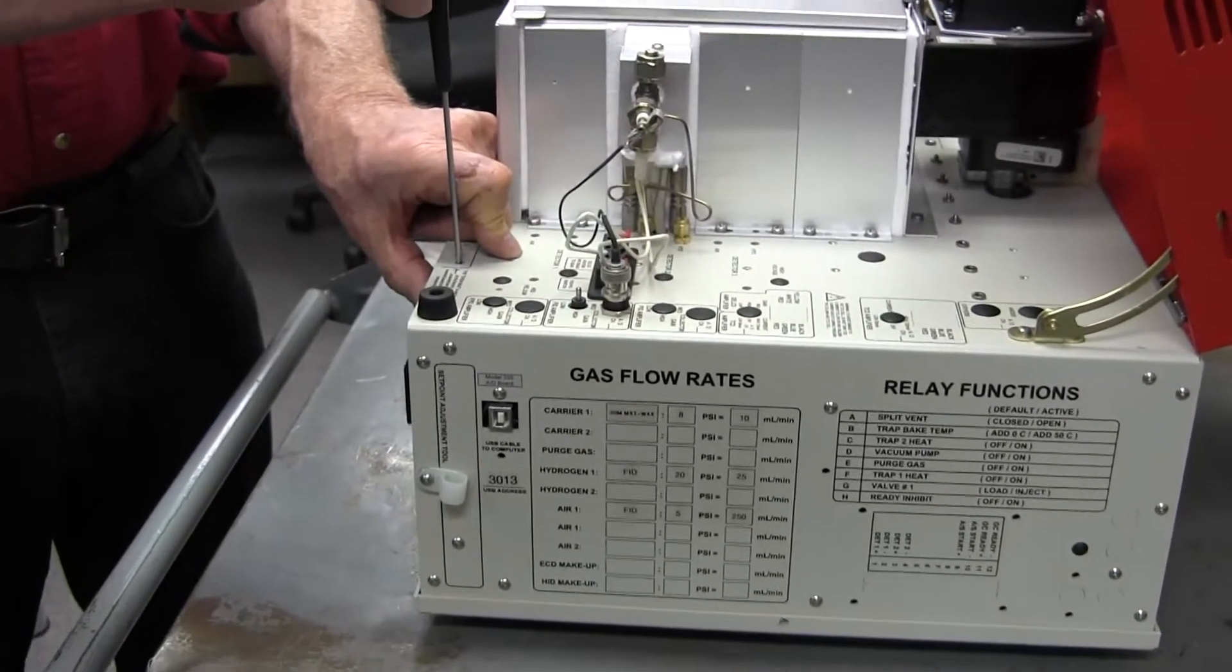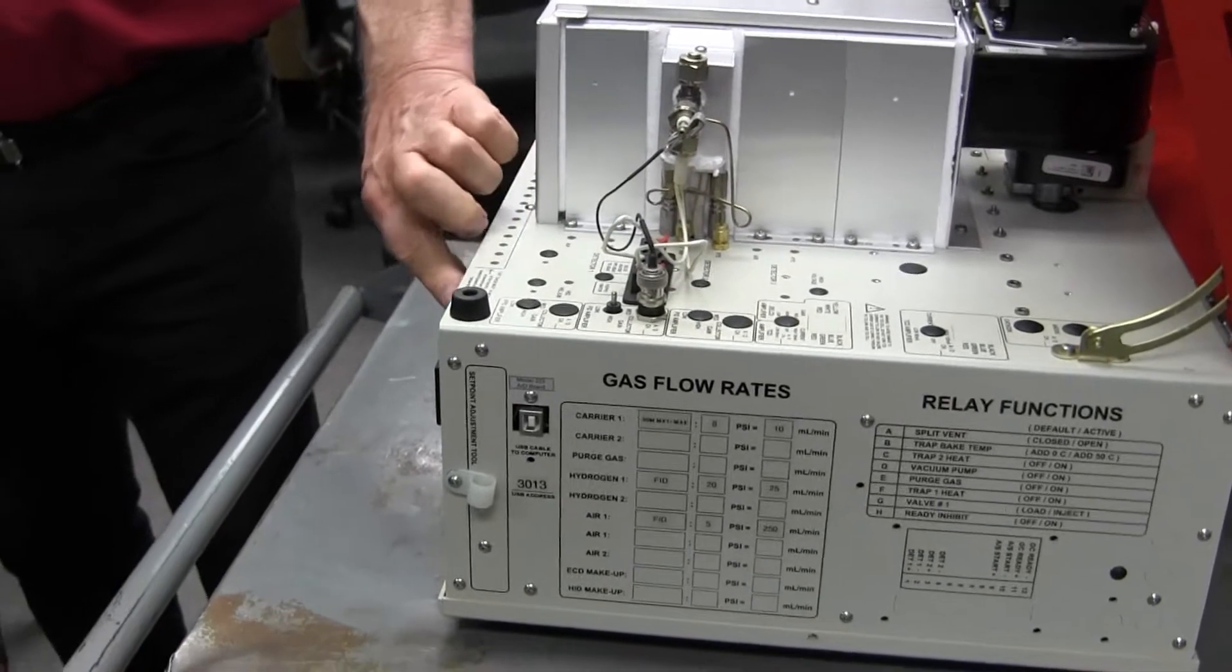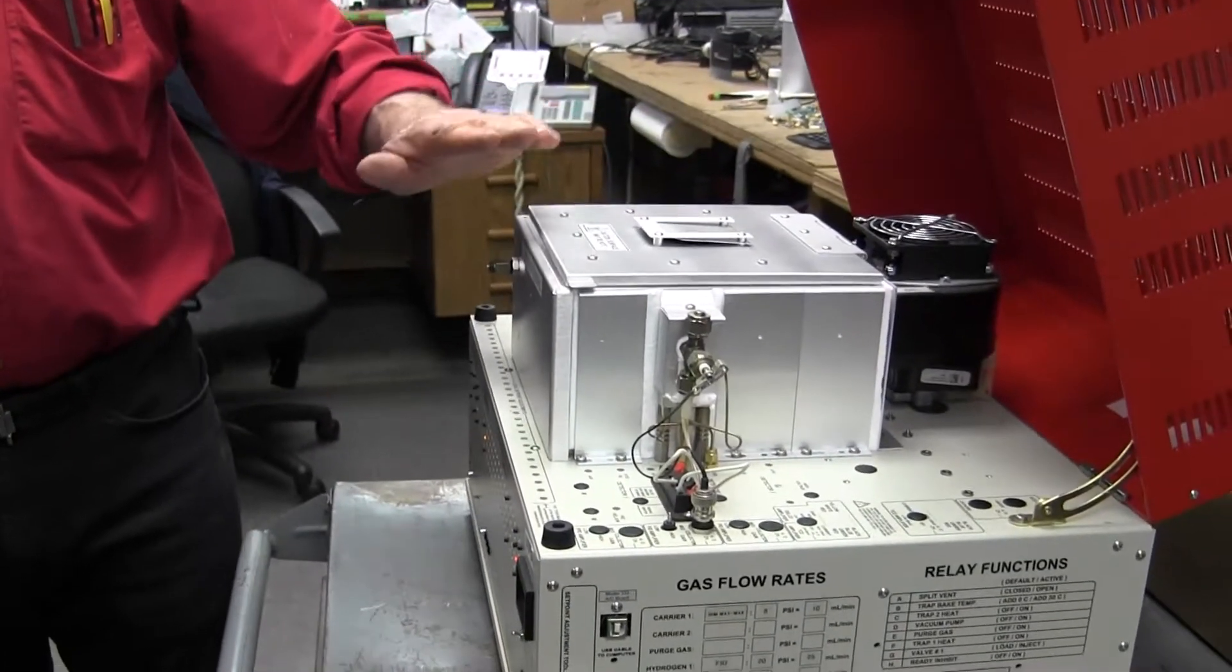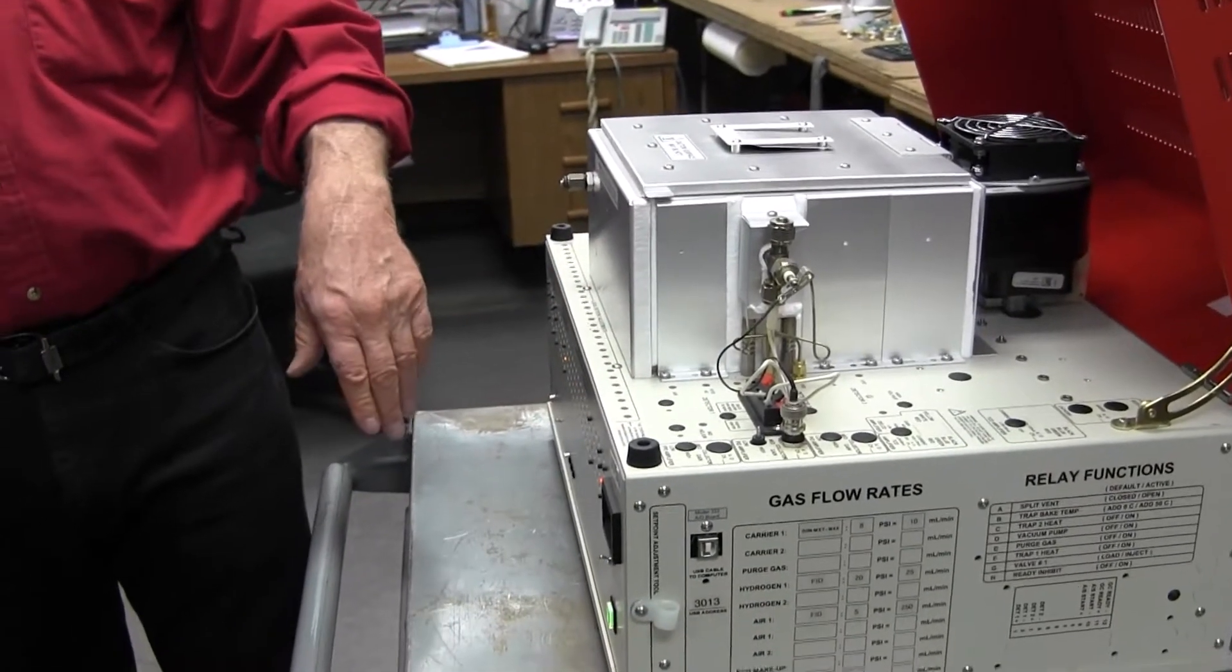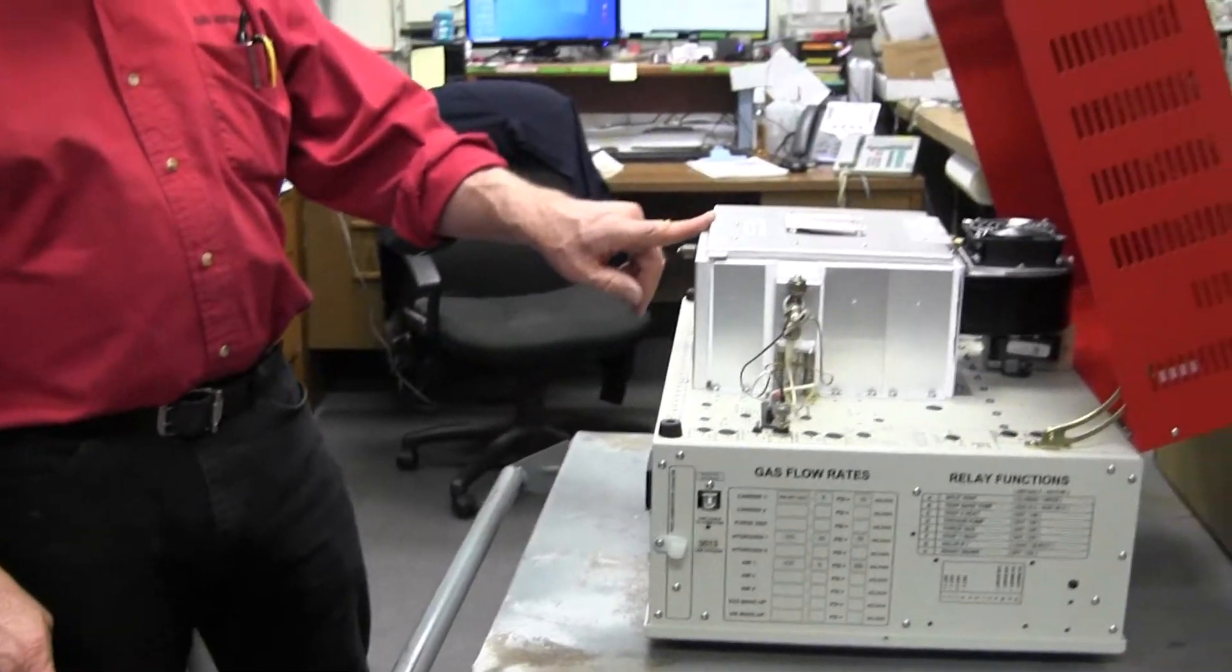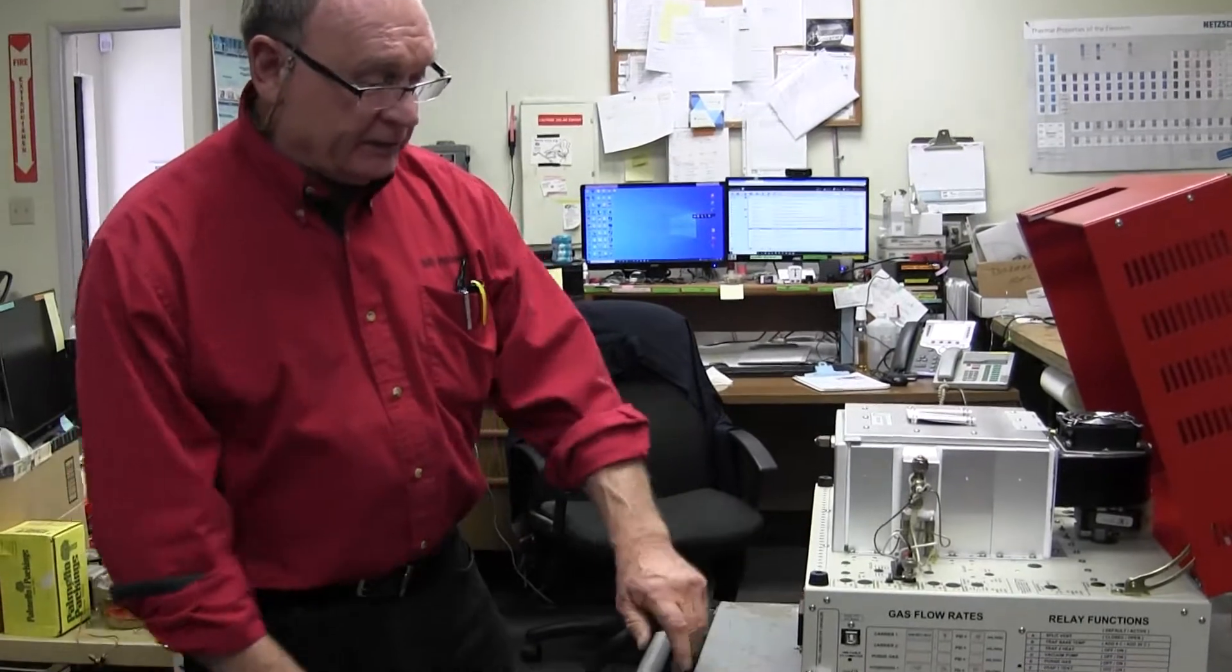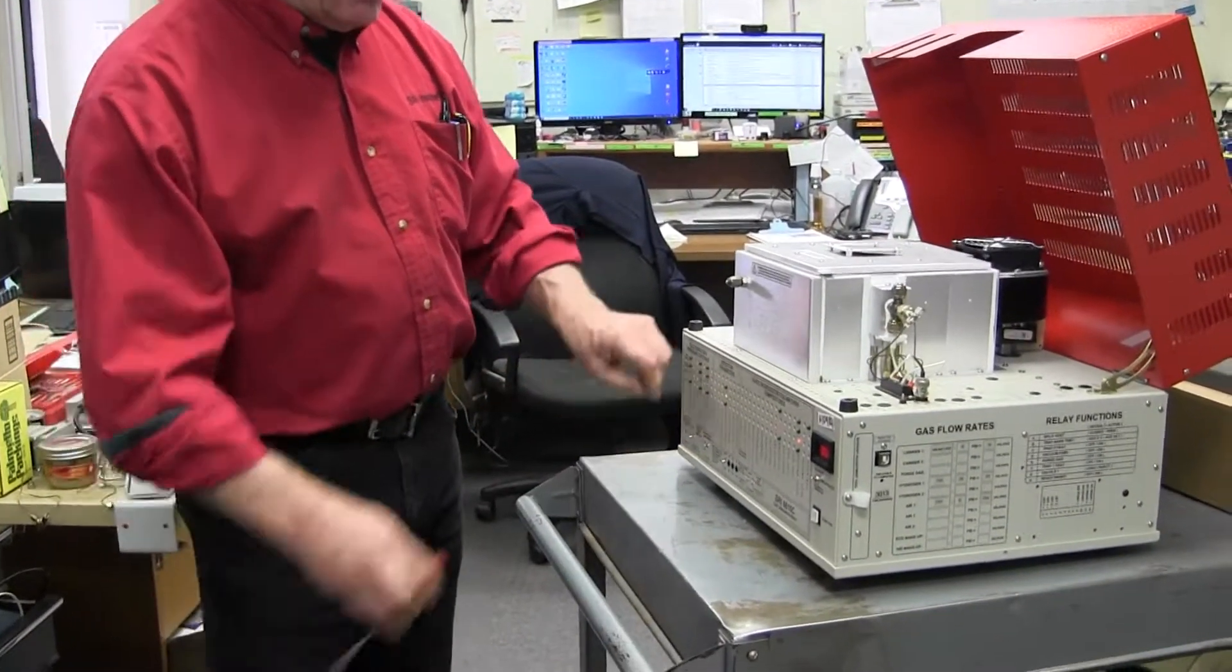So if I change the set point to 70, then that becomes the maximum temperature that the GC will let the oven heat to, regardless of whether it's just a setting or whether it's happening in reality. So that's one reason why if the temperature of the oven rises higher than the oven max, then this red light should come on.